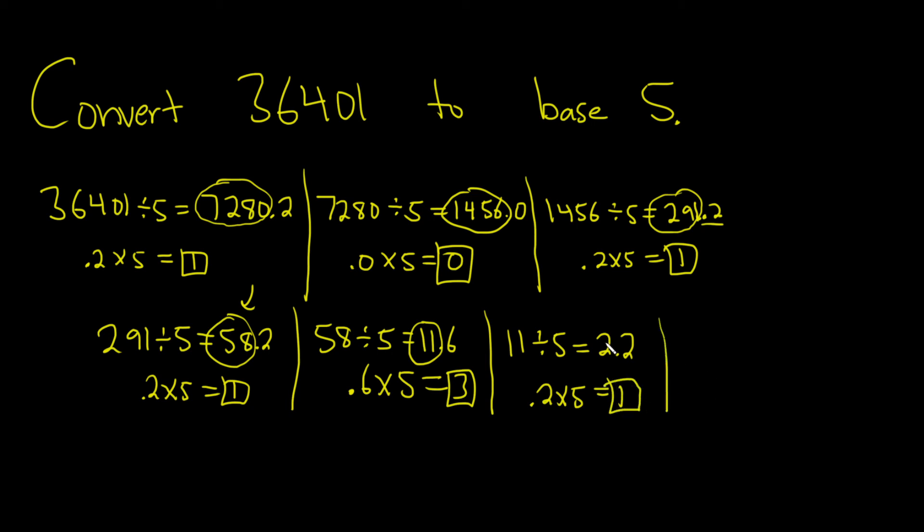Then you do it again. Take the 2, divide it by 5. This is 0.4. So you stop because it's just 0. This is your last step. Then you just do 0.4 times 5. It's just going to give you 2. I'll type it in. Just double check. 2.